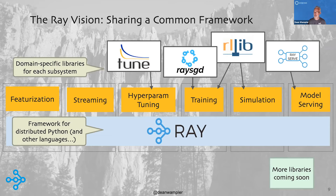There are actually more libraries now — third-party libraries are starting to use Ray, like Hugging Face, Horovod, and SpaCy. Those are three examples of using Ray in different ways under the hood to get distributed scaling.